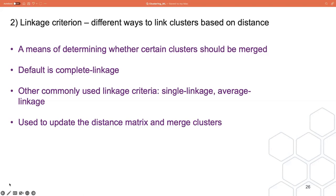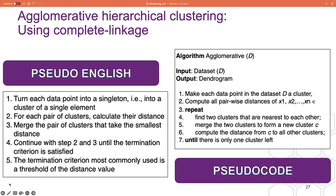The next thing to define is our linkage criteria, which determines the distance between sets of observations as a function of the pairwise distances between observations. In simple terms, the linkage criteria is a means of determining whether certain clusters should be merged, and different linkage methods produce different results — the dendrogram will look slightly different depending on the linkage method used. The default is often complete linkage, where we consider the distance between the most distant elements in each cluster. Other commonly used linkage criteria include single linkage and average linkage. We use our linkage criteria to update the distance matrix and merge clusters.